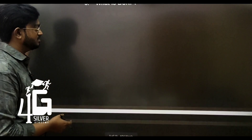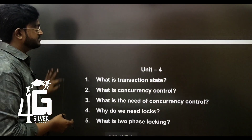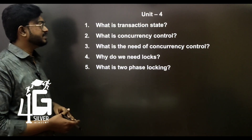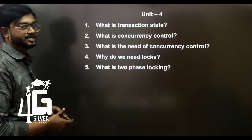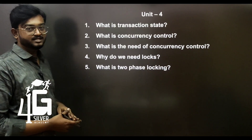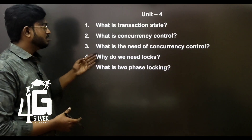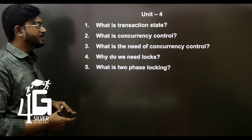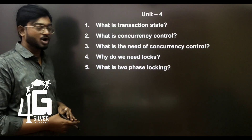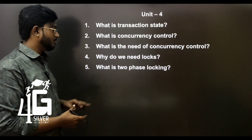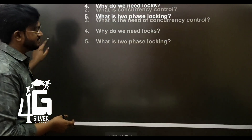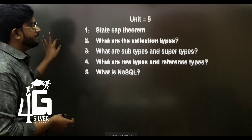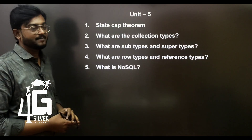What is BCNF? Next, Unit 4 important Part A questions: What is transaction state? What is concurrency control? What is the need of concurrency control? Why do we need locks? What is two-phase locking?